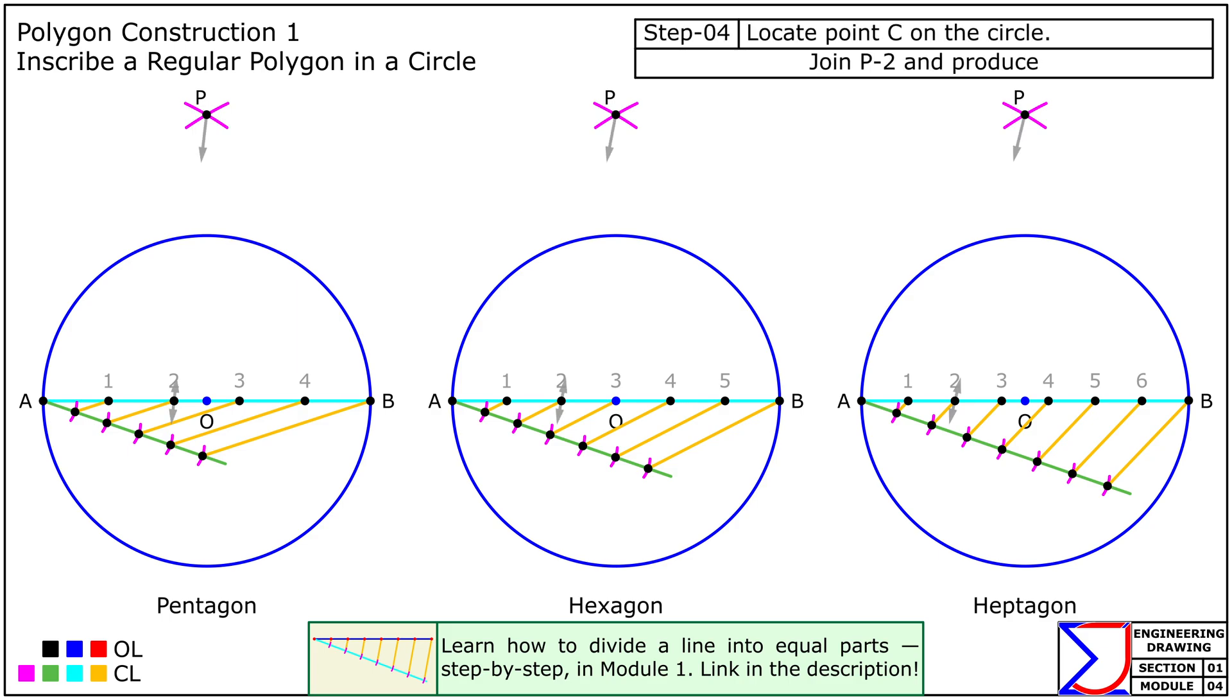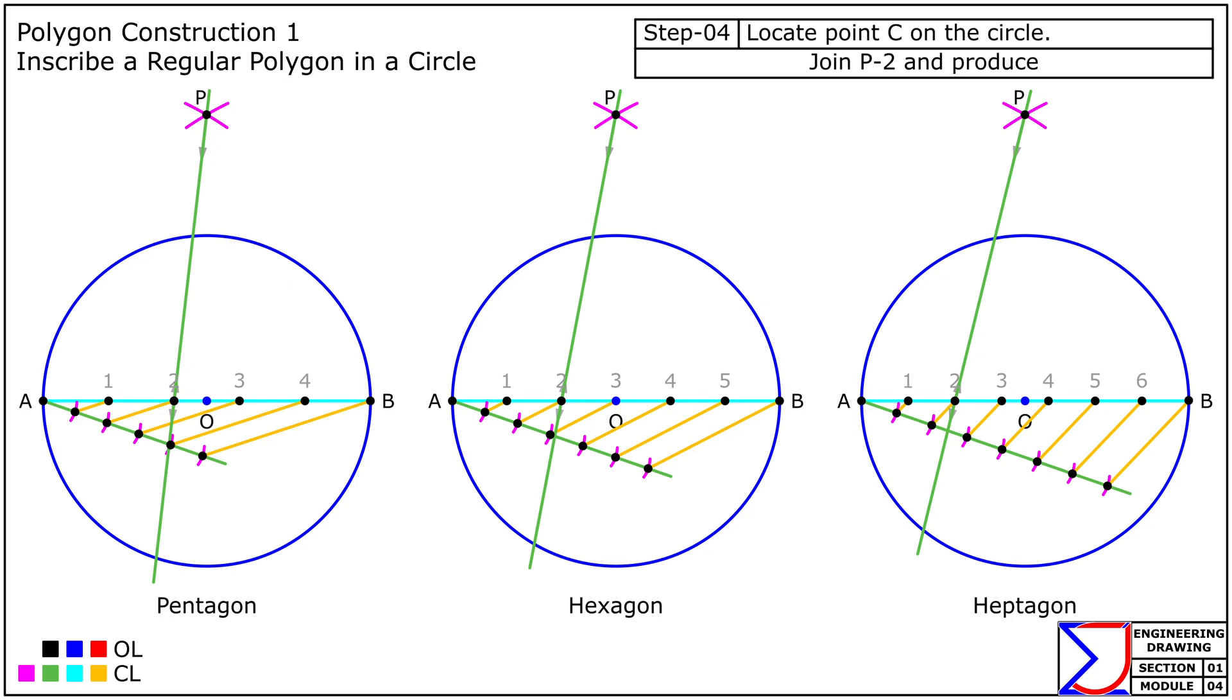From point P, draw a line passing through the second division point to meet the circle at point C. Then chord AC represents the side length of the required polygon. Now, taking AC as the radius, cut the circle progressively to get the remaining points D, E, F, and so on.